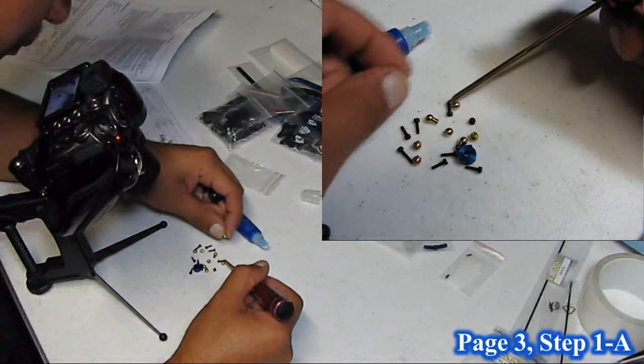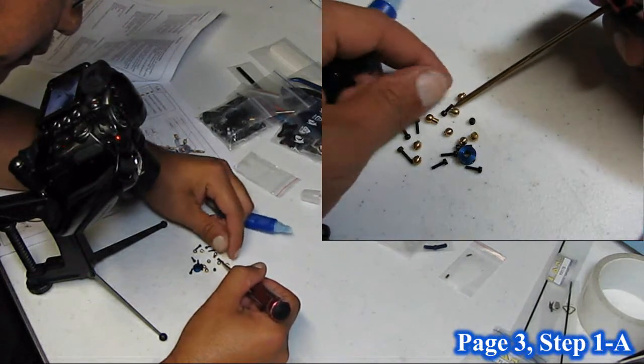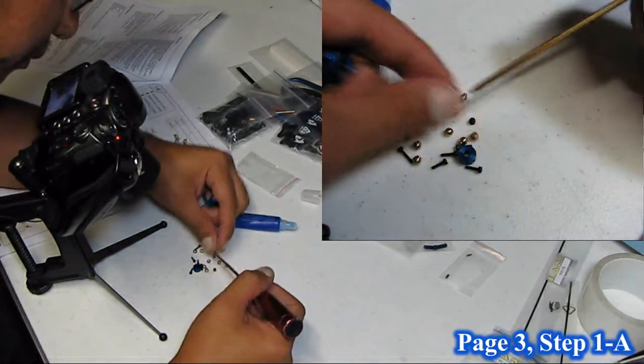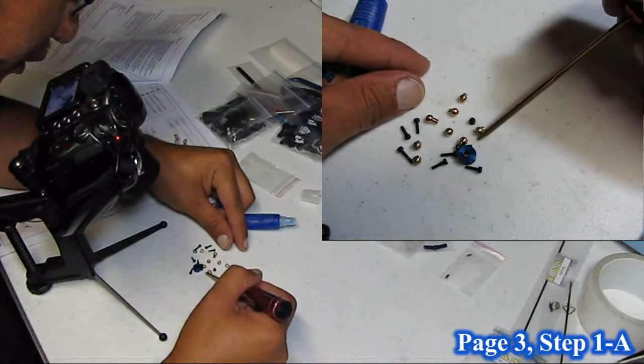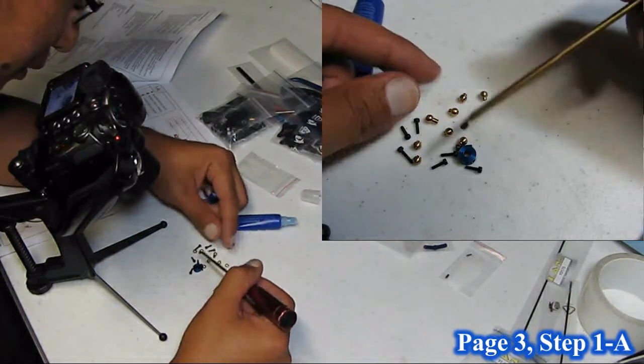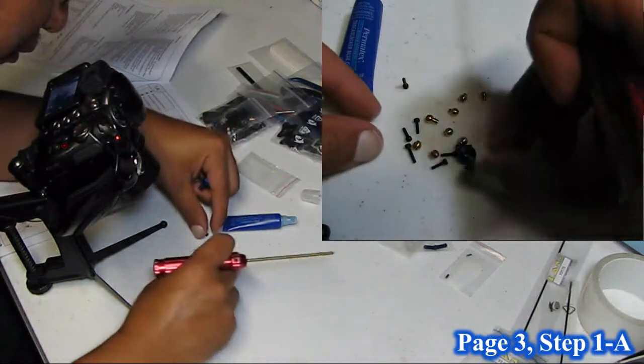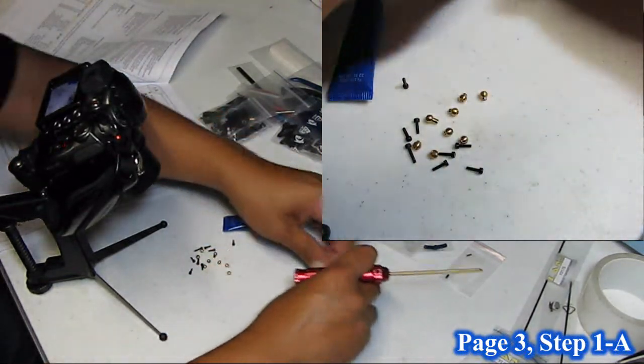There should be three of them in here. There they are right there. Set screw goes to the shaft collar, that won't be going on until later.